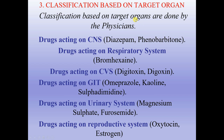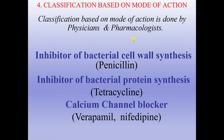Classification based on target organ is done by physicians. Examples include drugs acting on the CNS, drugs acting on the respiratory system, drugs acting on the cardiovascular system (CVS), drugs acting on the gastrointestinal tract (GIT), on the urinary system, and on reproductive systems. Classification based on mode of action is done by physicians and pharmacologists — examples include inhibitors of bacterial cell wall synthesis (penicillin), inhibitors of bacterial protein synthesis (tetracycline), and calcium channel blockers (verapamil or nifedipine).